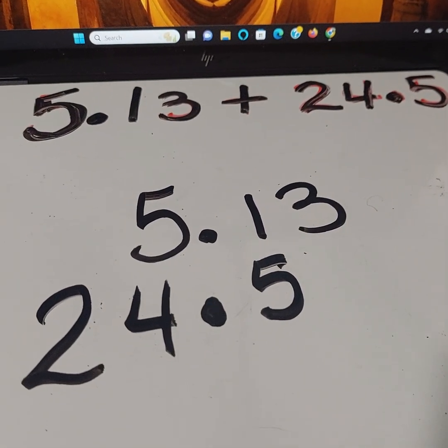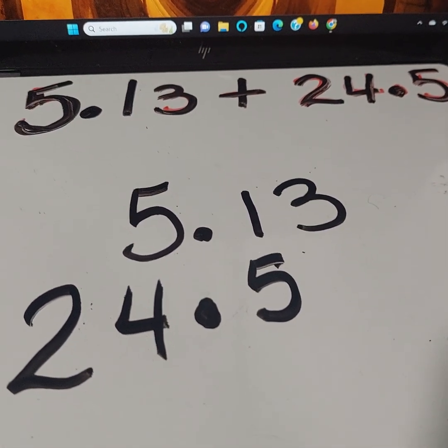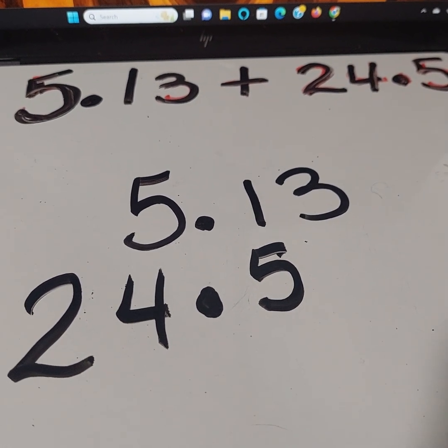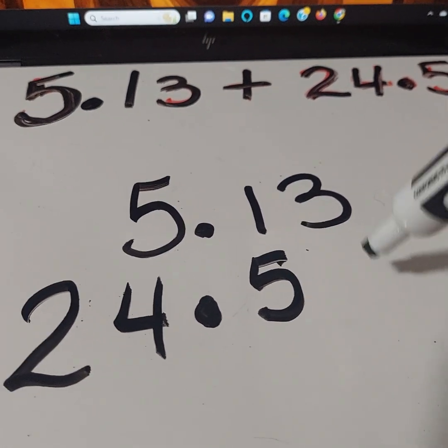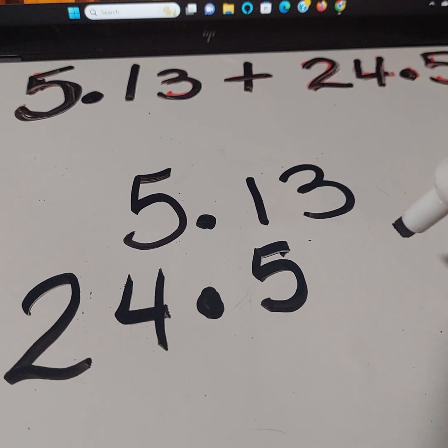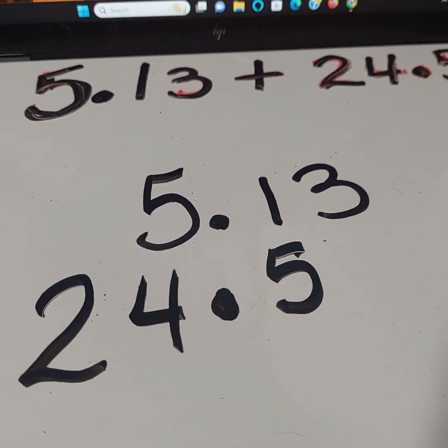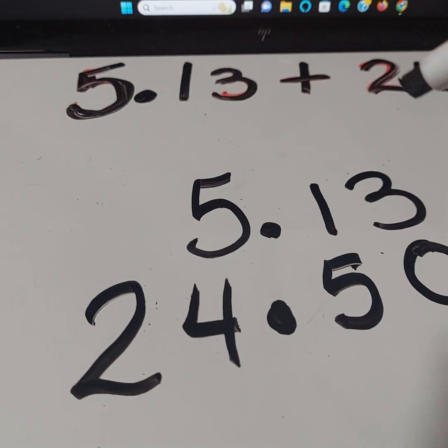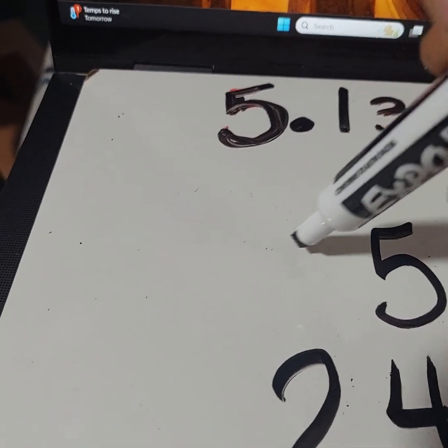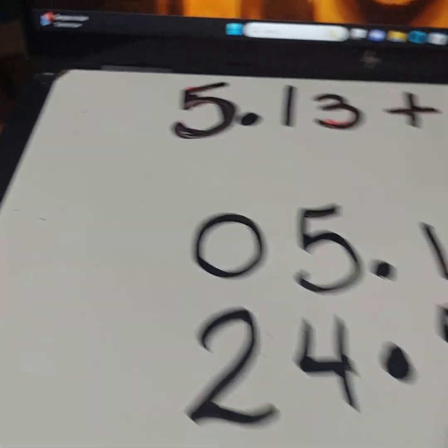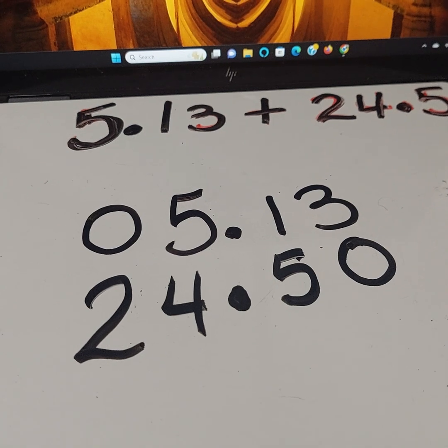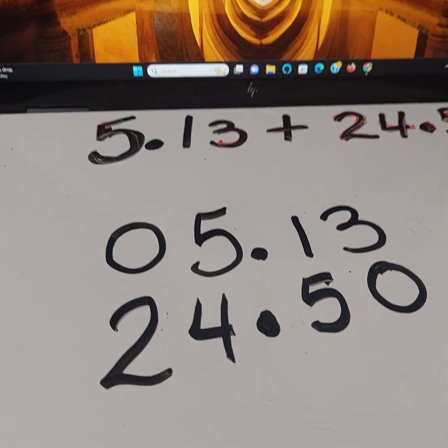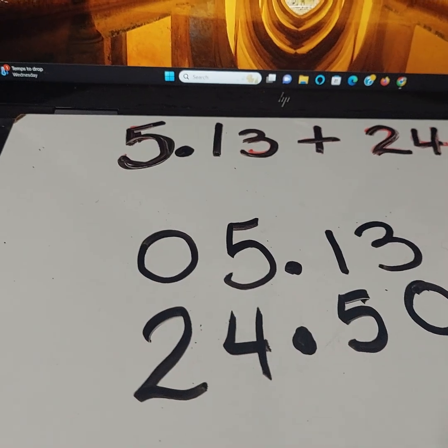One of the things you can do to make it look more uniform is to add some zeros. These zeros are called insignificant digits - it means they do not affect the value of your number. It's just a placeholder. Now you can clearly see that our place values are in line. Let's go ahead and add our numbers.